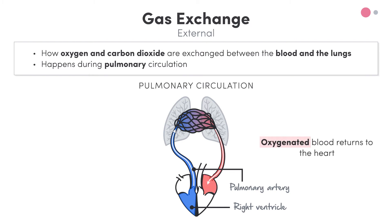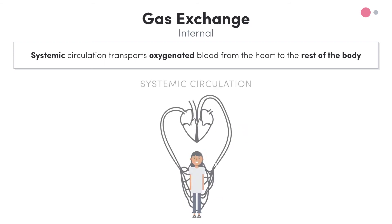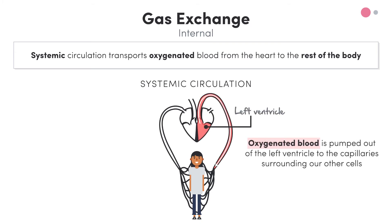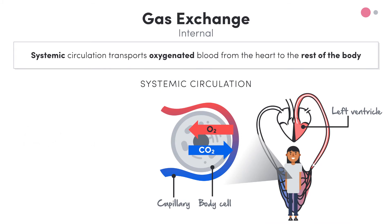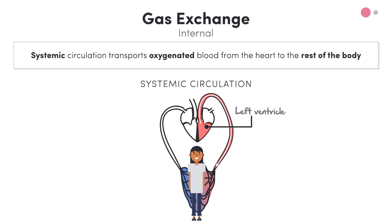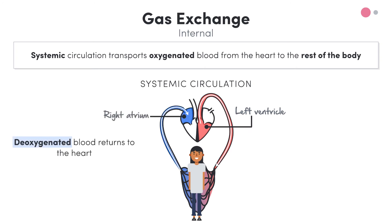Now let's look at internal gas exchange, which closely relates to systemic circulation. Systemic circulation transports oxygenated blood from the heart to the rest of the body. This blood is pumped out of the left ventricle all the way to the capillaries surrounding our other cells, like our muscles. This is where internal gas exchange occurs — it's called internal gas exchange since it happens inside our bodies. Oxygen diffuses from the blood in the capillaries to the cells, from high to low oxygen concentration. At the same time, carbon dioxide diffuses from the cell back into the blood. After internal gas exchange, the blood is deoxygenated and needs to be recycled. From the capillaries, the deoxygenated blood returns to the heart where the whole process can begin again.